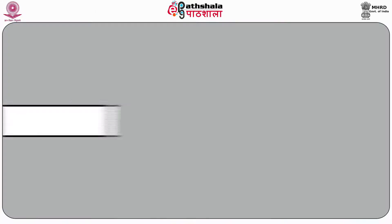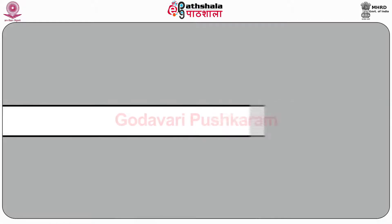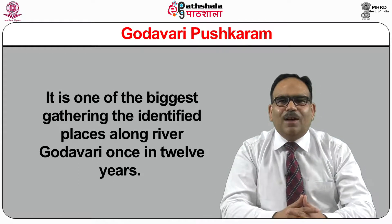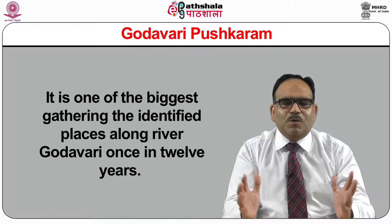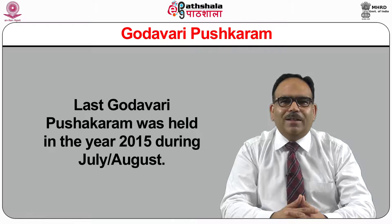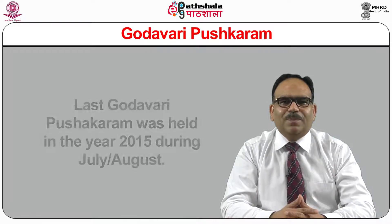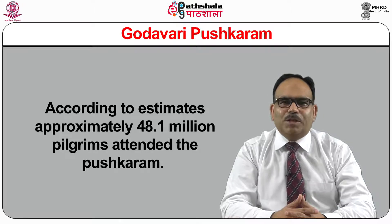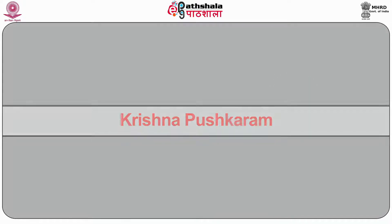Unexplored attractions include Undavalli Caves, Gandikota Canyon, Papi Kondalu, Amaravati, and Hope Island. Godavari Pushkaram is one of the biggest gatherings held at identified places along river Godavari once in 12 years. The last Godavari Pushkaram was held in 2015 during July-August, with approximately 48.1 million pilgrims attending. Krishna Pushkaram is observed along the river banks of Krishna once in 12 years, celebrated when Jupiter enters Virgo.